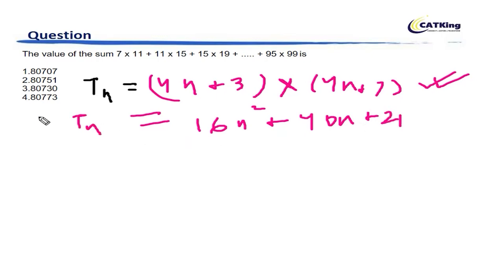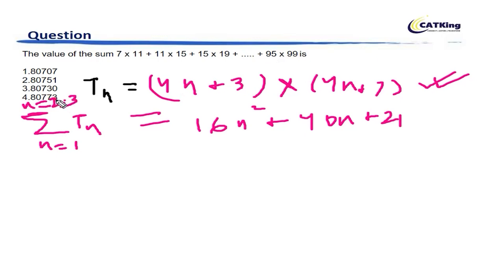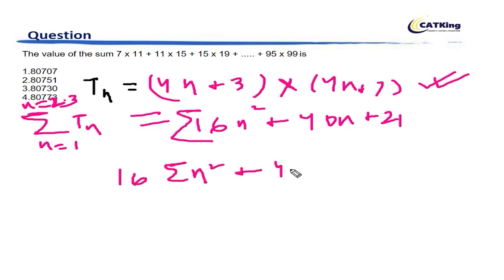Now we have to take the sum of Tn from n equal to 1 to some upper limit. If you put 4n plus 3 equal to 95, then 4n becomes 92, so n becomes 23. So we have to sum from n equal to 1 to n equal to 23. This becomes 16 times the sum of n² plus 40 times the sum of n plus 21 times the sum of 1.